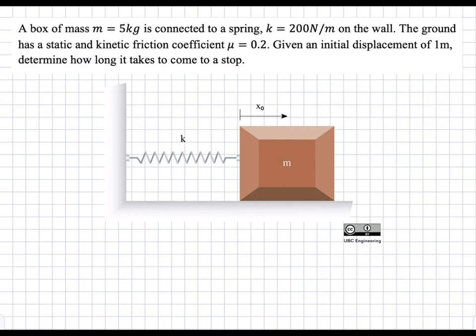In this problem, there is a mass attached with a spring to a wall, and this mass has friction between it and the bottom surface. We are asked to determine how long it takes for this mass to come to a complete stop if we apply an initial displacement of one meter from the equilibrium position.